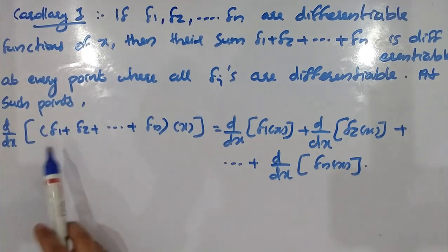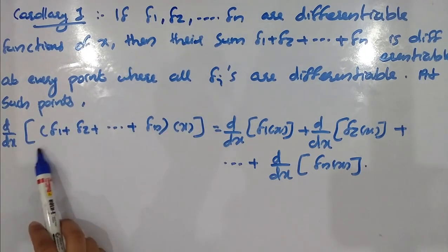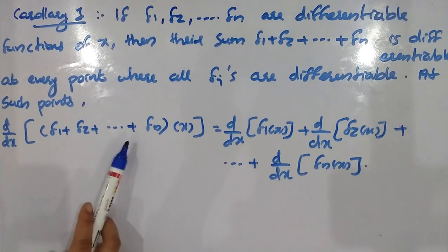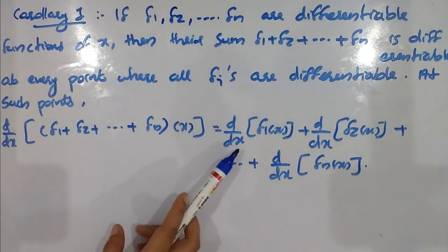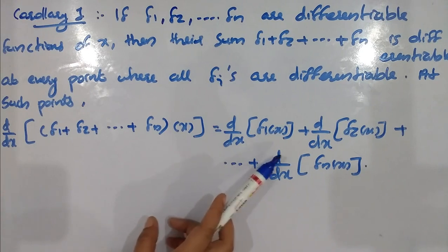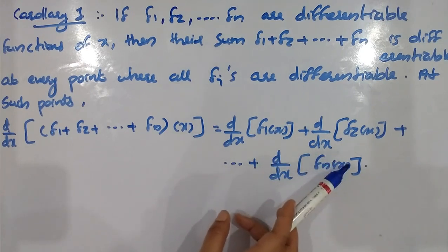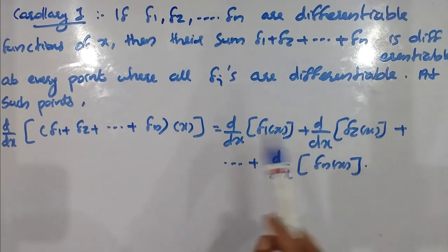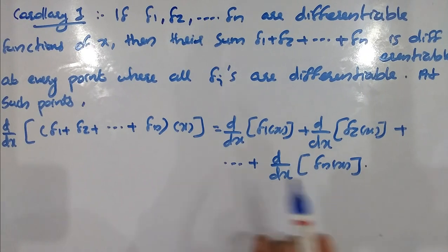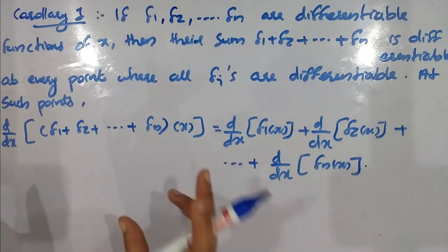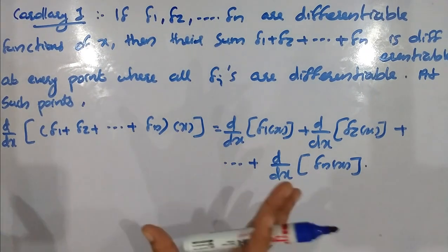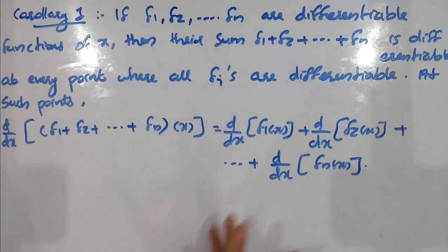At such points, d by dx of f1 plus f2 plus etc. fn of x is equal to d by dx of f1 of x plus d by dx of fn of x. Now, n functions are differentiable.